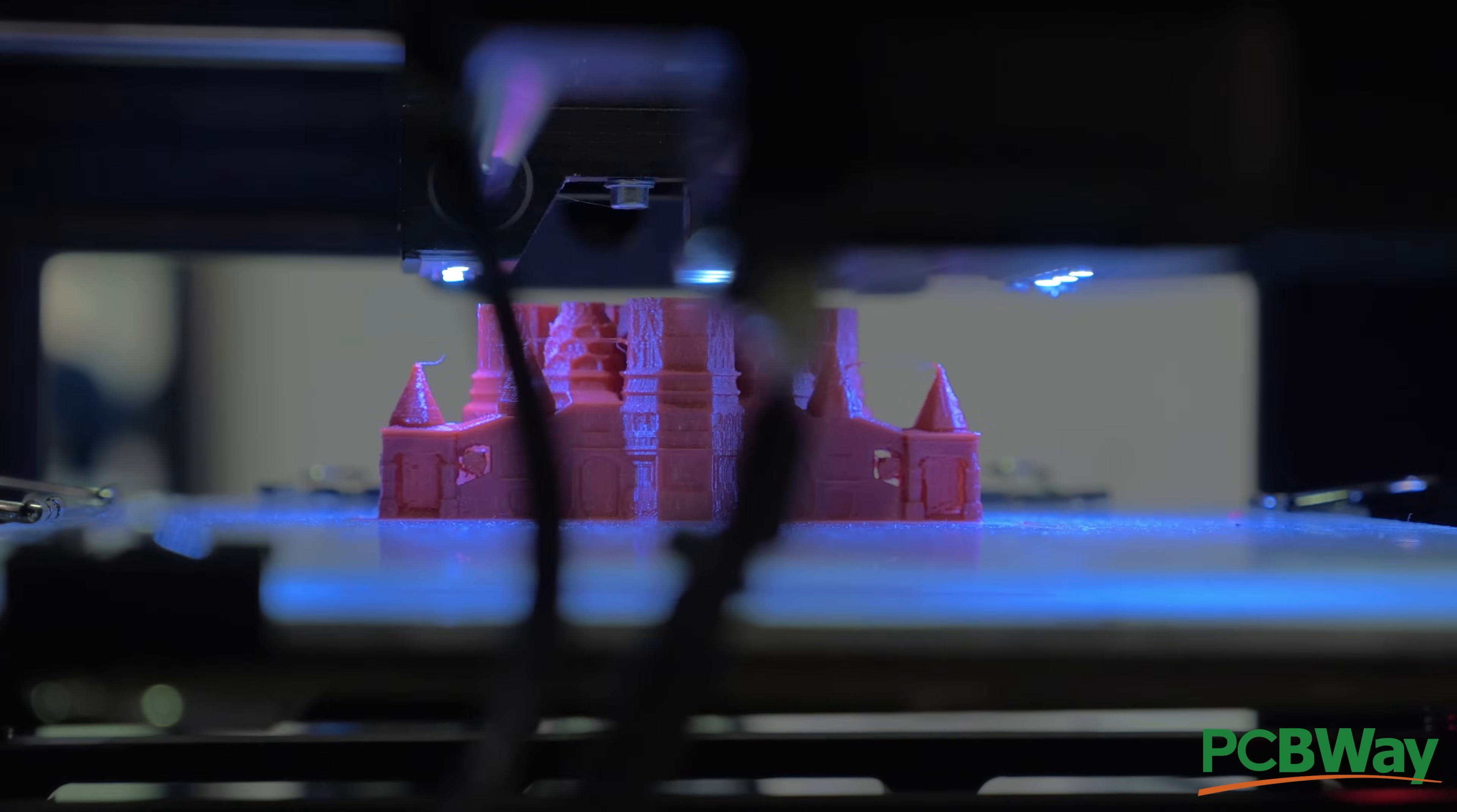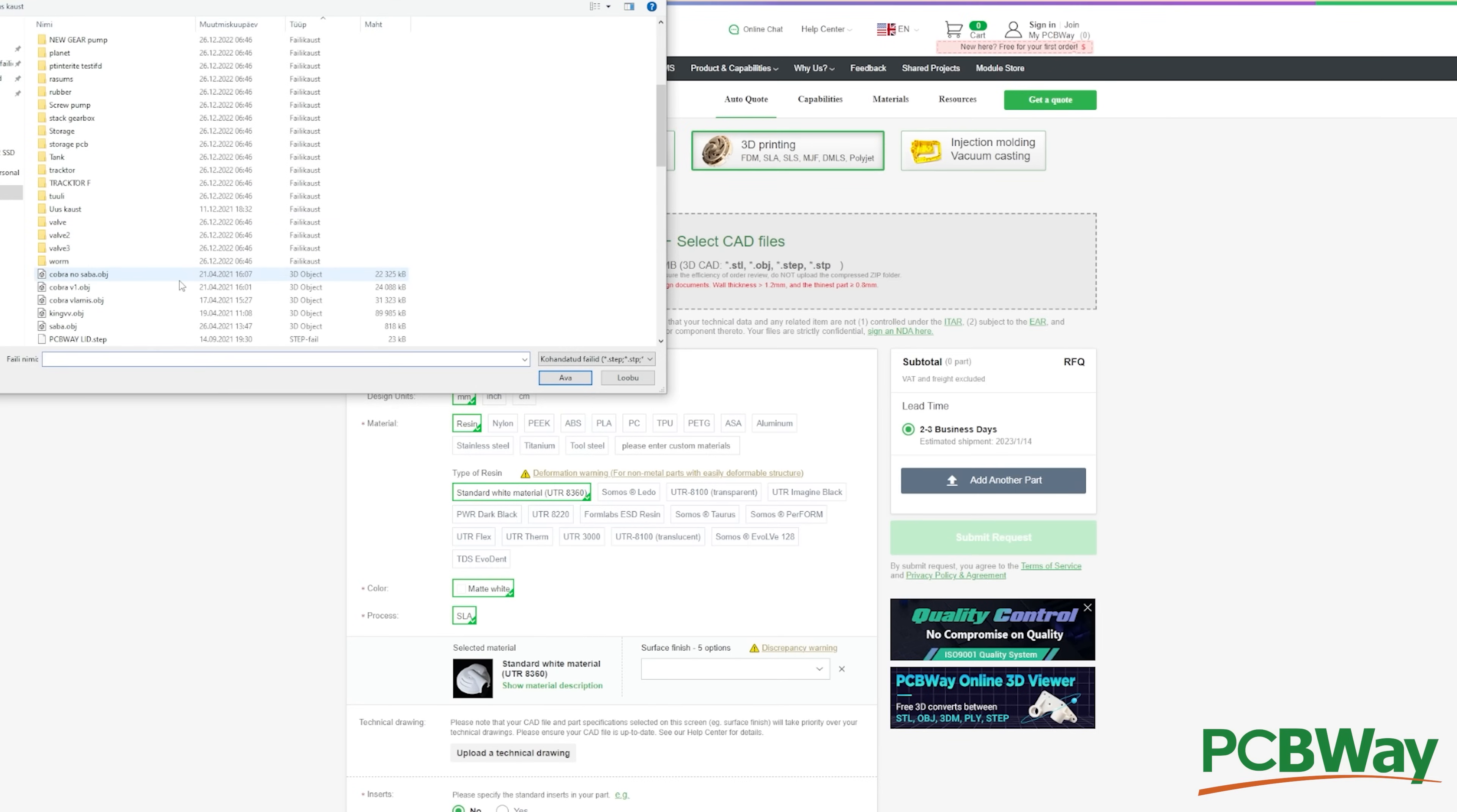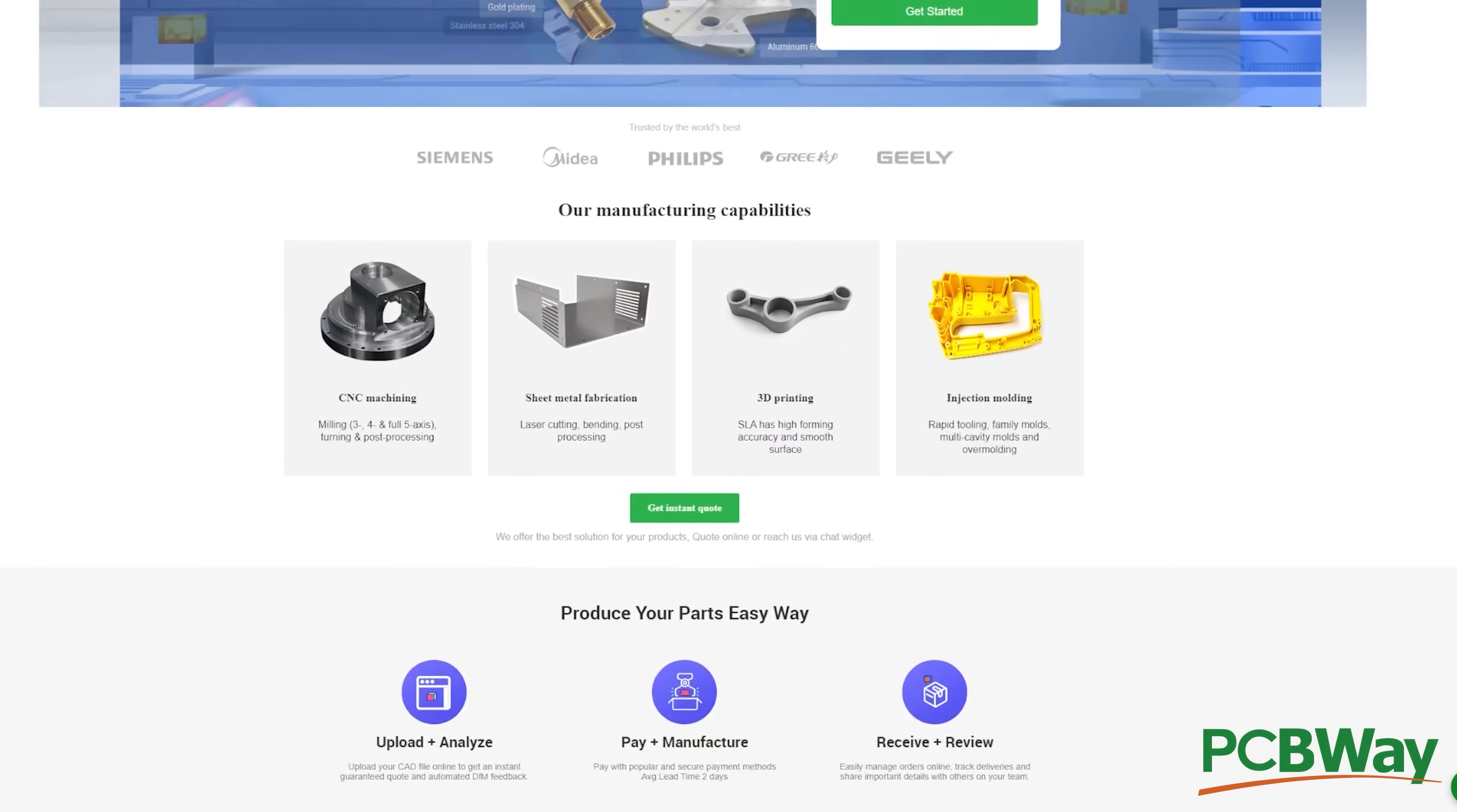PCBWay has excellent 3D printing service with a lot of different material options including metal. If you want to order something from PCBWay, all you have to do is upload your 3D model, select the material, and PCBWay will do the rest. If this is not impressive enough, PCBWay also has CNC machining, sheet metal fabrication, and even injection molding service. If you need something but you don't have the right machine skills or tools, PCBWay is your one-stop solution. Big thanks again to PCBWay for making this video possible. But now it's time to continue with the testing.